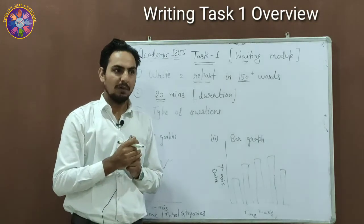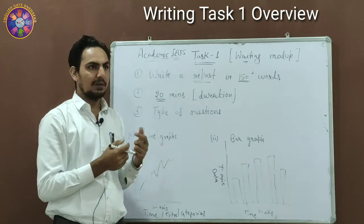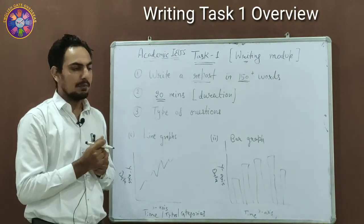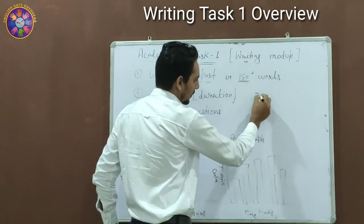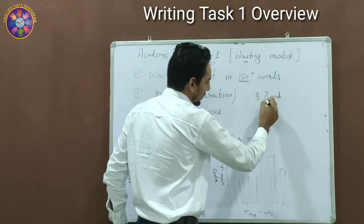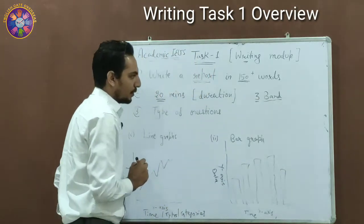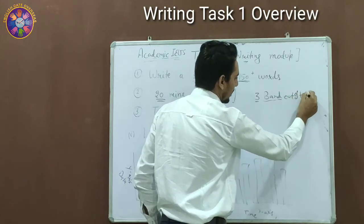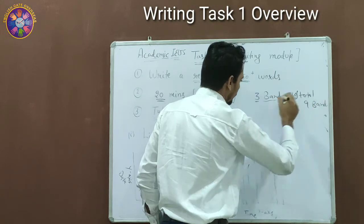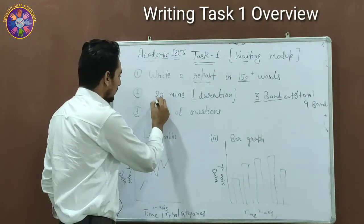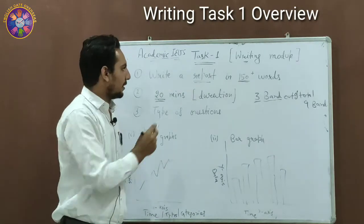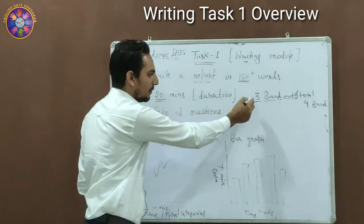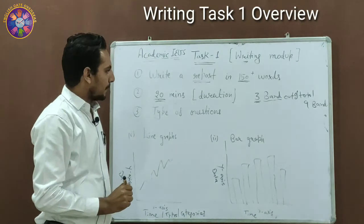It entirely depends on you whether you want to give it 25 or 30 minutes, but the ideal time is 20 minutes. This task contributes three bands out of your overall nine bands. Since the whole writing module is one hour, you should not spend more than 20 minutes on Task 1 in any circumstance because it is only worth three bands.